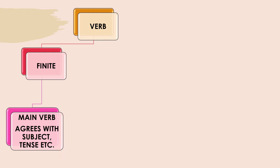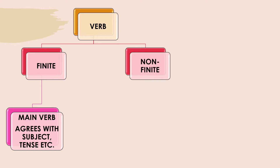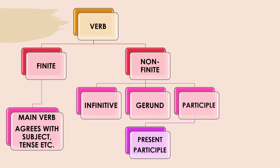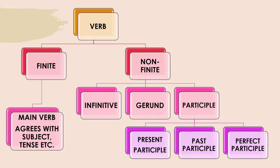A verb is either finite or non-finite. A finite verb is a main verb which agrees with the subject, with the tense, etc. Whereas the non-finite verb is of three types: the infinitive, gerund, and participle. The participle again is of three types: the present participle, past participle, and perfect participle. So this is the classification of verbs on the basis of them being finite or non-finite.